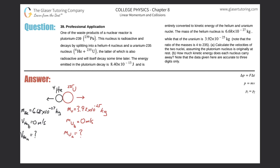Number 39, professional application. One of the waste products of a nuclear reactor is plutonium. This nucleus is radioactive and decays by splitting into a helium-4 nucleus and a uranium-235 nucleus, the latter of which is also radioactive and will itself decay some time later. The energy emitted in the plutonium decay is 8.4 times 10 to the minus 13 joules and is entirely converted to kinetic energy of the helium and uranium nuclei. The mass of the helium nucleus is 6.68 times 10 to the minus 27 kilograms, while that of the uranium is 3.92 times 10 to the minus 25 kilograms. Note that the ratio of the masses is 4 to 235.